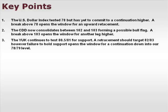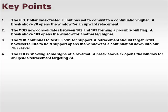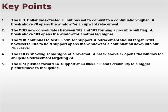The YUK continues to test 80.5-81 for support. A retracement should target 82-83. However, failure to hold support opens the window for a continuation down into our 78-79 level. The EUI is showing some signs of a reversal pattern. A break above 72 opens the window for an upside retracement, targeting 74. The BPX pushes towards 64, with support at 63-63.5 lending credibility to a bigger picture move to the upside.